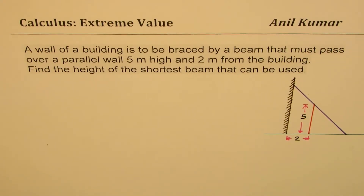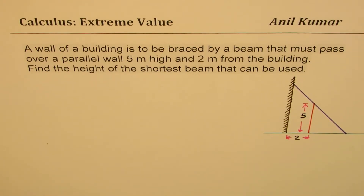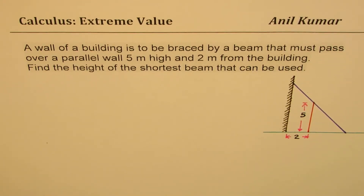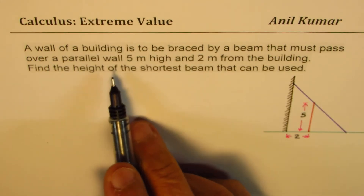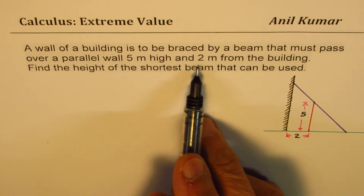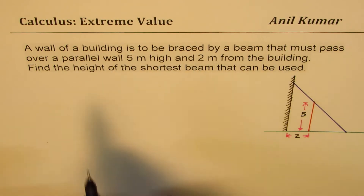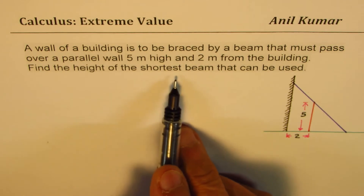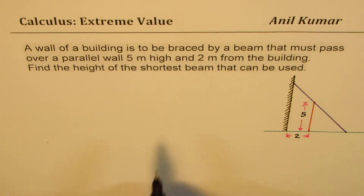I'm Anil Kumar sharing with you a very critical question on extreme value. The question here is: the wall of a building is to be braced by a beam that must pass over a parallel wall 5 meters high and 2 meters from the building. Find the height of the shortest beam that can be used.